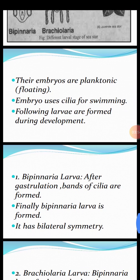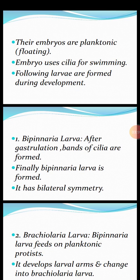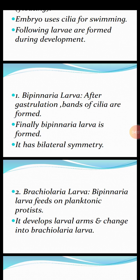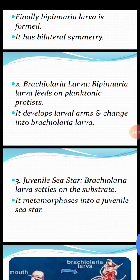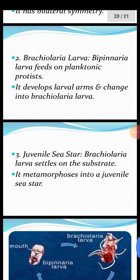The following larvae are formed during development in sea stars. The first is the bipinnaria larva — after gastrulation, bands of cilia are formed, and finally the bipinnaria larva is formed. It has bilateral symmetry: bi means two, lateral means sides, and symmetry means arrangement. The second larva is the brachylaria larva. The bipinnaria larva feeds on free-floating planktonic protists, develops larval arms, and changes into the brachylaria larva.